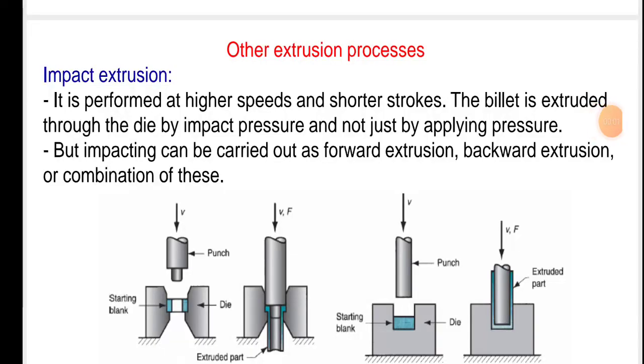Welcome back friends, we are studying the subject manufacturing process in which we will see the next topic, other extrusion processes. Impact extrusion: it is performed at higher speed and shorter strokes. The billet is extruded through the die by impact pressure, not just by applying pressure but impacting.